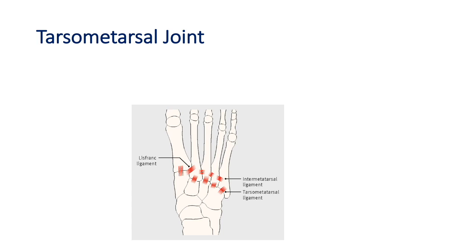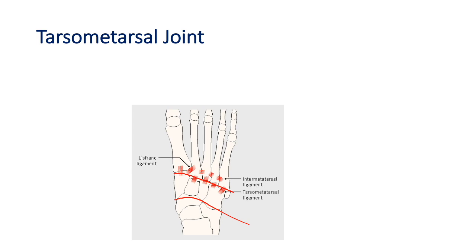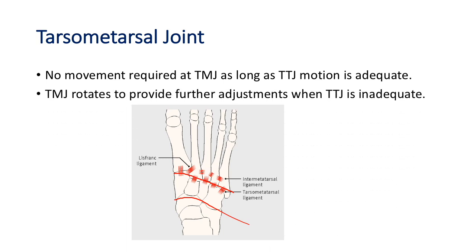The next joint is the tarsometatarsal joint, which is distal to the transverse tarsal joint. There is not much movement here as it is firmly stabilized by surrounding ligaments, but there will be some movement if transverse tarsal motion is inadequate. The tarsometatarsal joint will rotate to provide further adjustment during walking when the transverse tarsal joint is insufficient.